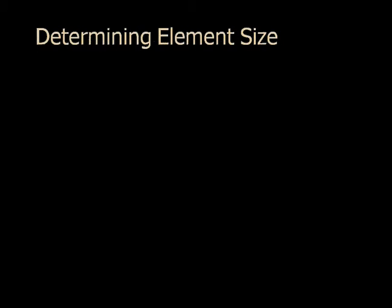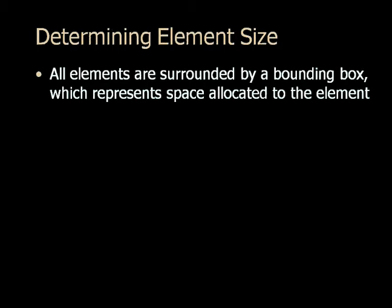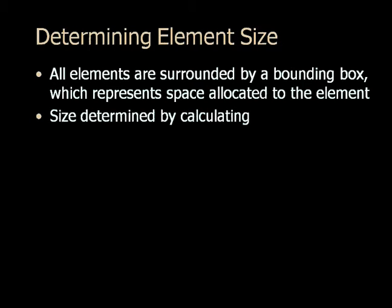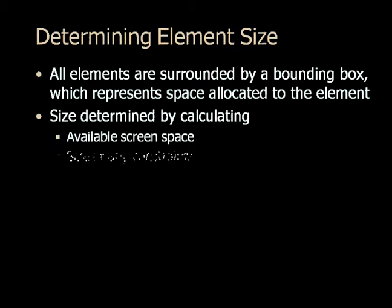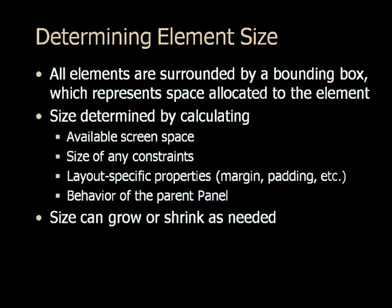In Windows Forms and web forms, controls have a fixed size — if you put a button on a Windows form and change the window size, the button doesn't change its size. But in XAML it does. All elements are surrounded by a bounding box representing the space allotted to the element. The actual size at runtime is determined by calculating the available screen space, the size of any constraints such as the container, the values of layout-specific properties like margin and padding, and the behavior of the parent panel.